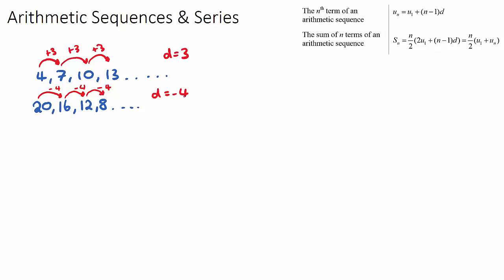A rule of thumb for the common difference, if you want to figure it out, is it's the second term minus the first term. Terms we write as U, so U2 means the second term and U1 means the first term in a sequence. For our first example, U2 is 7, and 7 minus 4 gives our common difference of 3. This is the same as U3 minus U2, or U4 minus U3 — it's any term subtract the term before it.